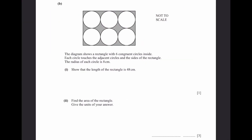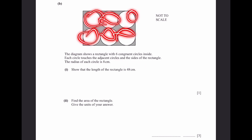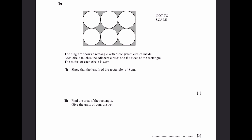Part B: A rectangle contains 6 congruent circles, each with radius 8 cm. Each circle touches adjacent circles and the sides of the rectangle. (1) Show that the length of the rectangle is 48 cm. There are 6 radii spanning the length: 6 × 8 = 48 cm.